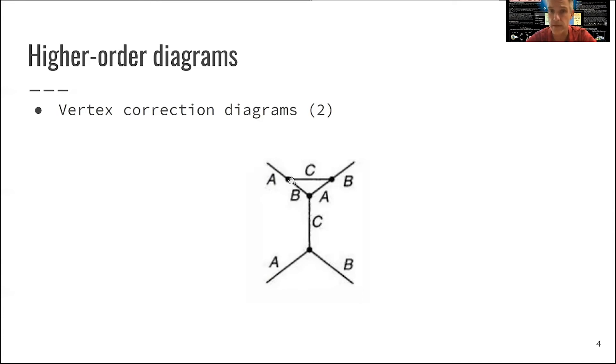So instead of directly interacting in this primitive vertex, you have this interaction here and those two additional vertices here. So this changes intrinsically how the interaction, how the strength of the interaction looks like.